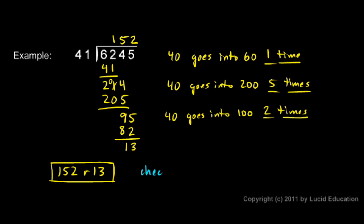And of course I can check my answer by multiplying. If I take my 152 and multiply it by 41 and then add in the remainder I should end up with the original number. And when we do this 152 times 41 comes out to be 6,232.